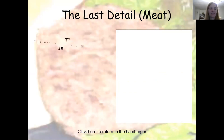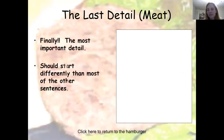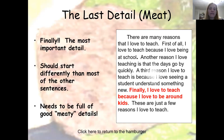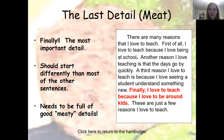The last detail is the meat — this is the most important detail, the meat of the hamburger. Without hamburger meat, we have no hamburger. This has to start differently than most of the other sentences and it needs to be full of meaty details. For example: 'Finally, I love to teach because I love to be around kids.' That's probably the most important reason I have, and that's why I'm making it the meat of my sandwich.